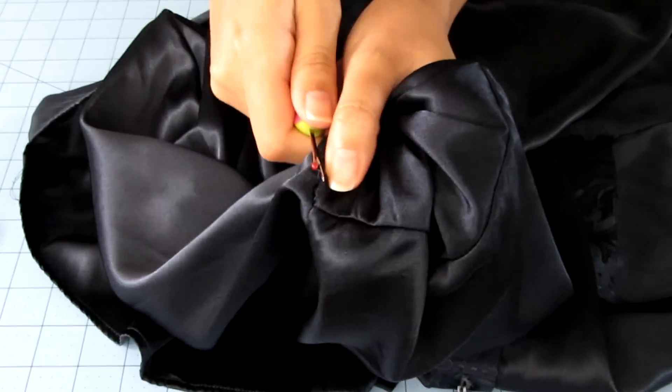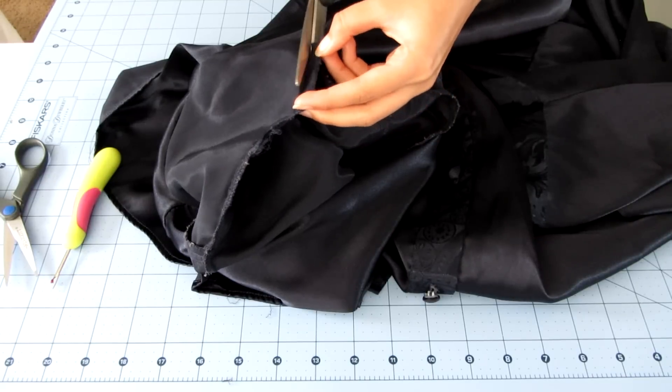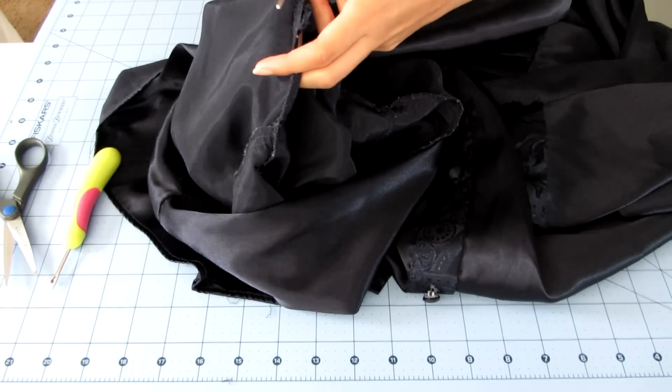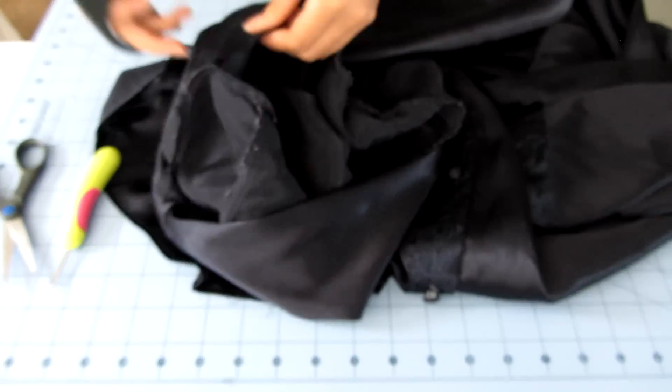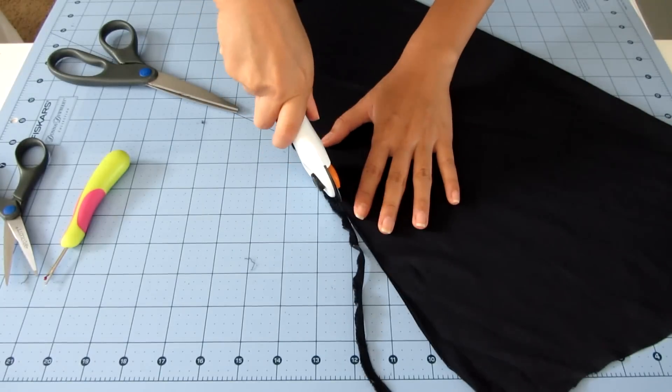Anyway, to get started, I decided to use the sleeves for the top and I tried to seam rip it. It took forever, so I went at it with my scissors instead, and after that I also cut off the sleeve seams.